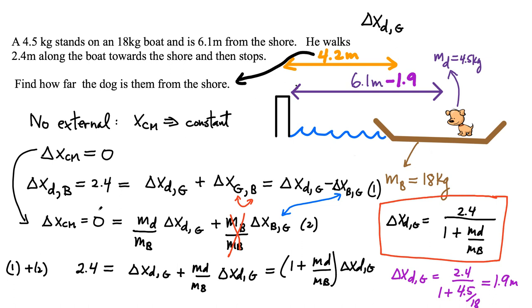That's the correct answer for this problem — a standard center of mass problem. You do need two equations, and you have to be careful about how you write the displacements. Make sure you write them relative to the correct reference. The 2.4 meters is measured along the boat, so it's relative to the boat, not relative to the ground. Be careful with that.